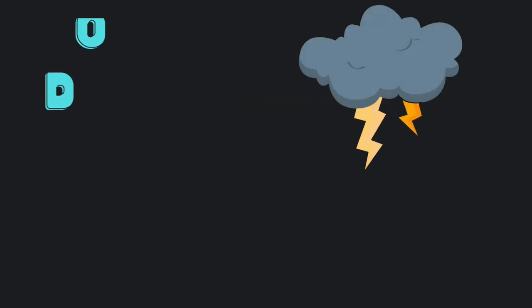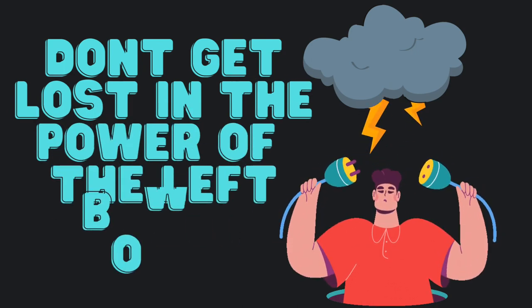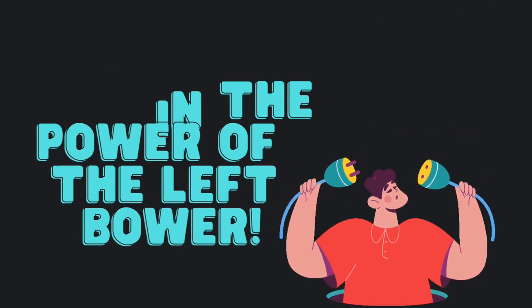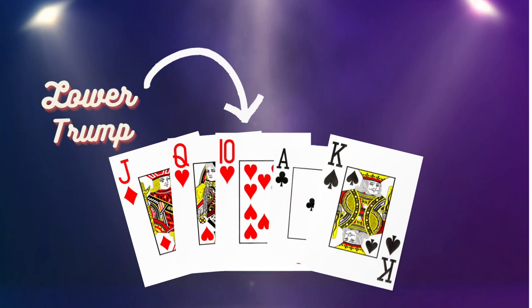Another mistake is getting so caught up in the power of the Left Bower that you forget about your other cards. Sometimes a lower Trump or even an offsuit card is a better play.